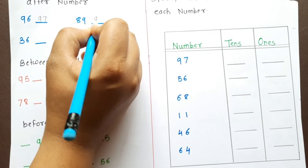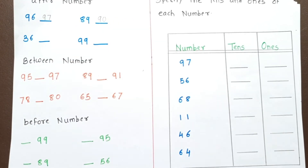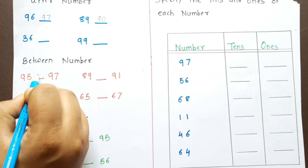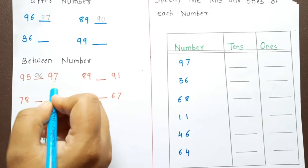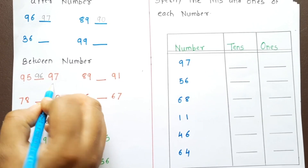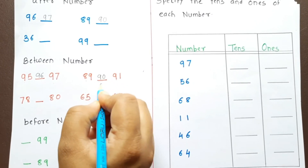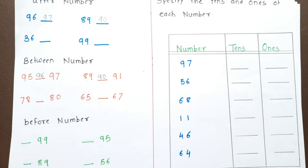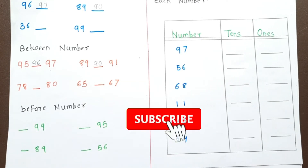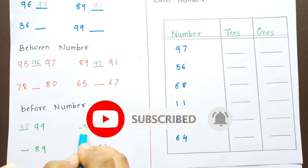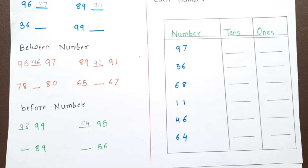Between numbers: 95 and 97 — the between number is 96. 89 and 91 — the between number is 90. Before number: 99 — the before number is 98. 95 — the before number is 94. After, between, and before number concepts are covered in this worksheet.